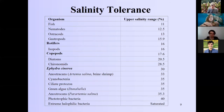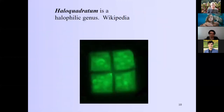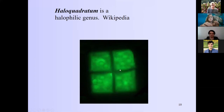An example of a halophilic genus is Haloquadratum. It lives in supersaline water and is isotonic with it — it has super high concentrations of salt inside and outside the cell, so it doesn't even need a defined shape. It's just cubes. If it were trying to keep salt out it would probably blow up into a round balloon shape, but it doesn't.